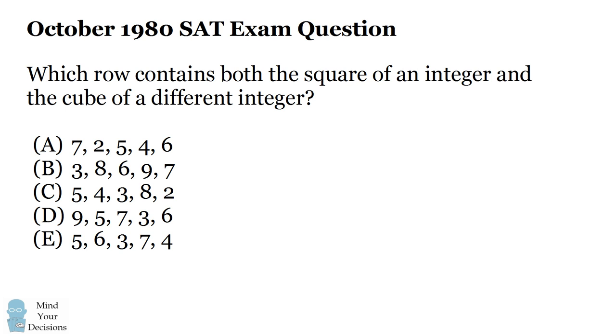Okay, so the test makers intended for there to be exactly one correct answer, which was answer choice B. This contains the number nine, which is the square of the integer three, and it contains the number eight, which is the cube of a different integer two.